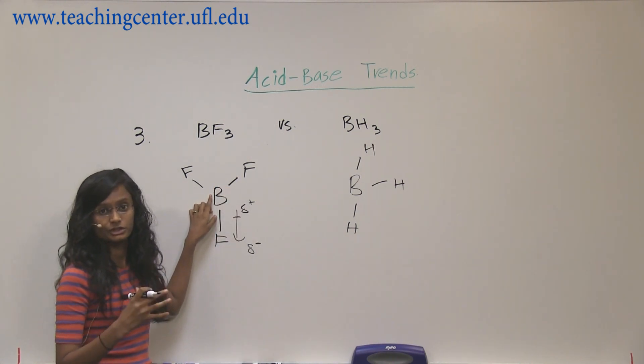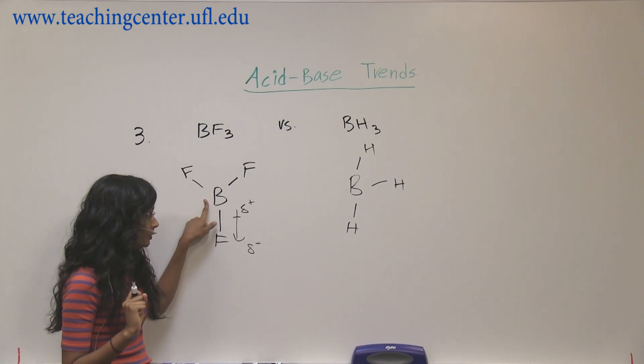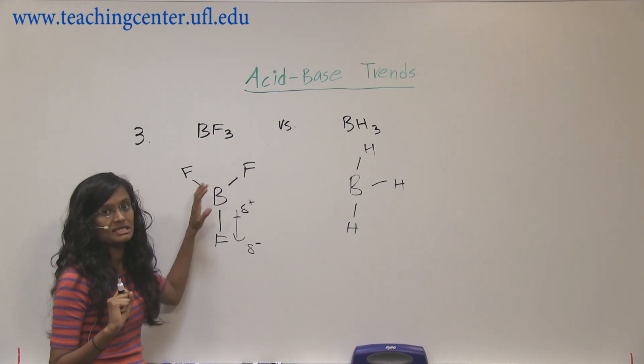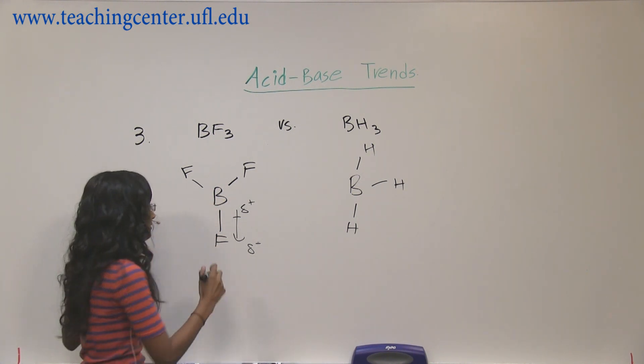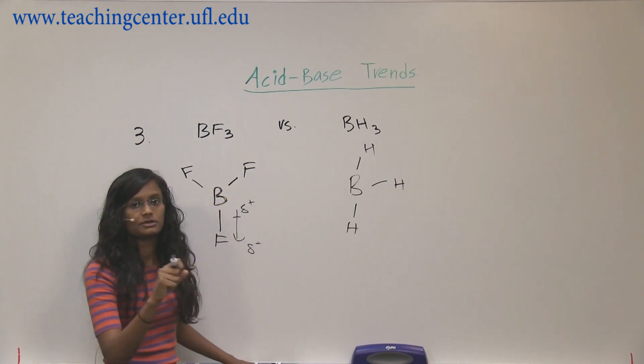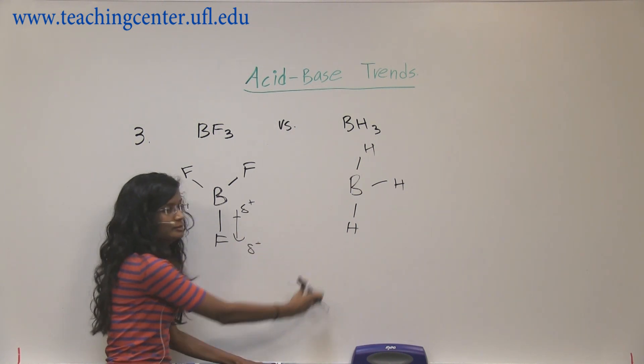Fluorine is making the boron more deficient to grab another lone pair and become stable. So that means the boron, this acid, would want to grab the lone pair more likely than BH3.